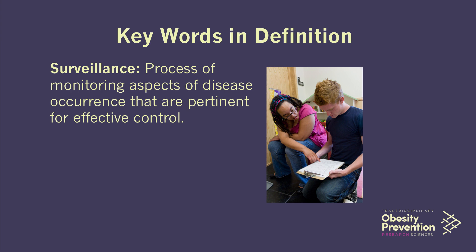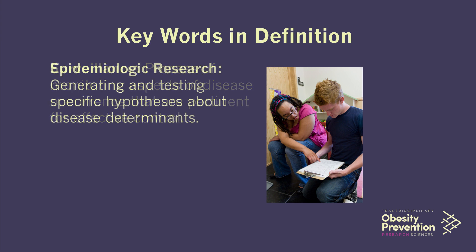And this is where epidemiologic research comes in — we hypothesize, for example, that if people were to exercise more, they would be less likely to be overweight or obese. When we think about obesity, we think of it as having a high amount of body fat in relation to body mass. This is typically based on what we call the body mass index.